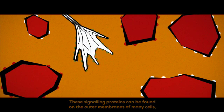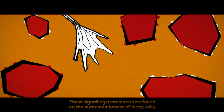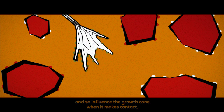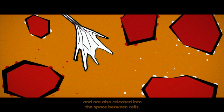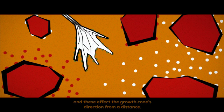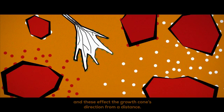These signalling proteins can be found on the outer membranes of many cells and so influence the growth cone when it makes contact, and are also released into the spaces between cells and these affect the growth cone's direction from a distance.